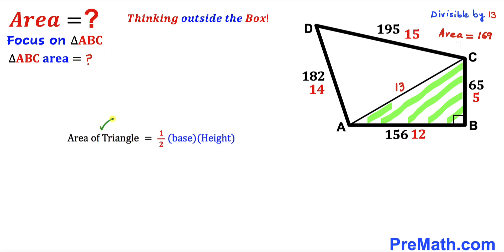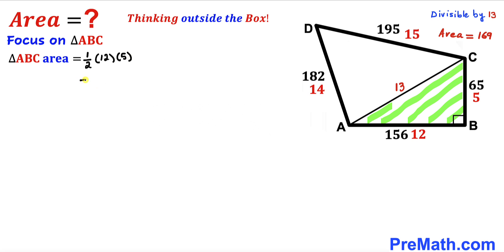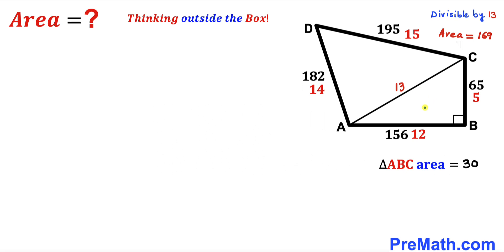Now we calculate the area of triangle ABC using the formula: area equals one-half times base times height. For triangle ABC, 12 is the base and 5 is the height. So the area is one-half times 12 times 5, which gives us 30 square units. The area of triangle ABC is 30 square units.